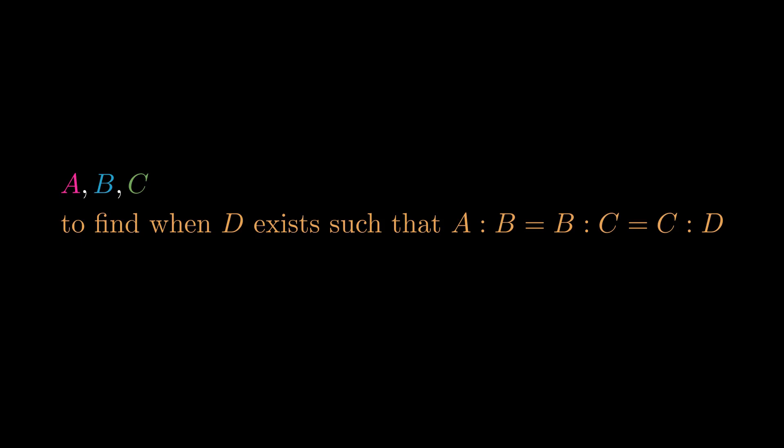My copy of Euclid's Elements has the following excerpt. The Greek text of this proposition is corrupt. However, analogously to Proposition 18, the condition that a fourth proportional to A:B:C exists is that A measure the product of B and C.